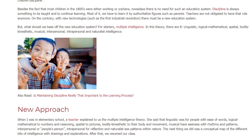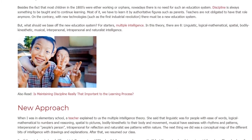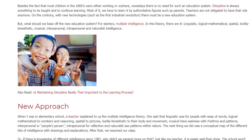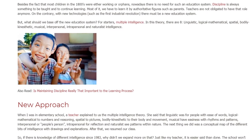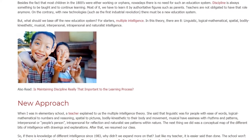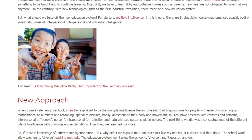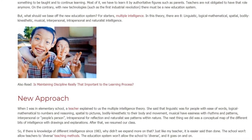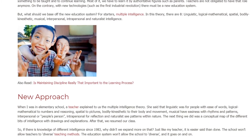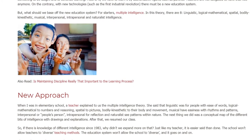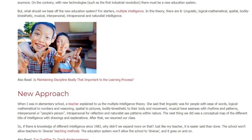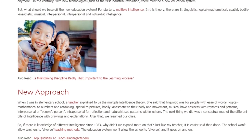In this theory there are 8 intelligences: Linguistic, Logical-Mathematical, Spatial, Bodily-Kinesthetic, Musical, Interpersonal, Intrapersonal, and Naturalist Intelligence.